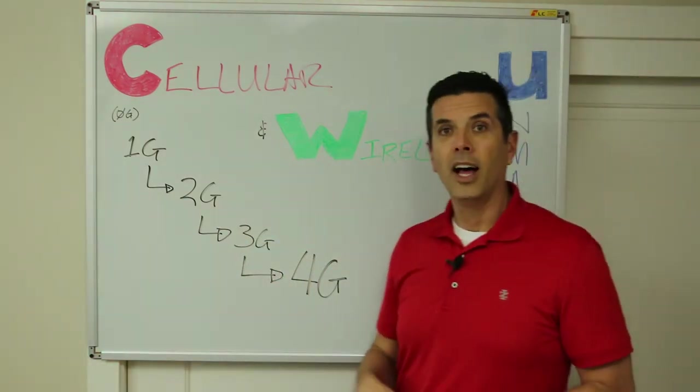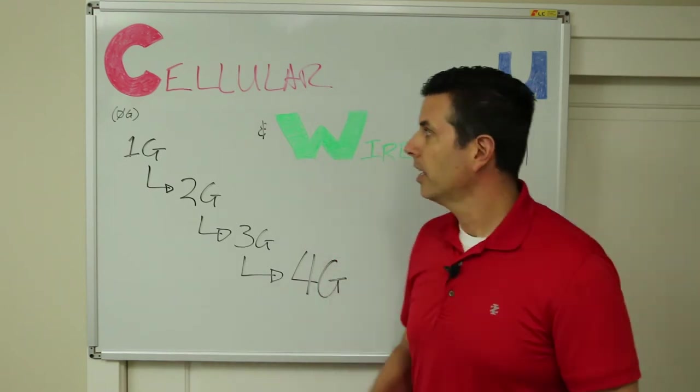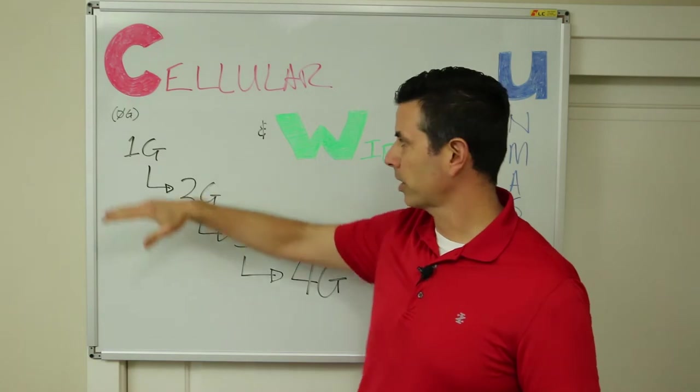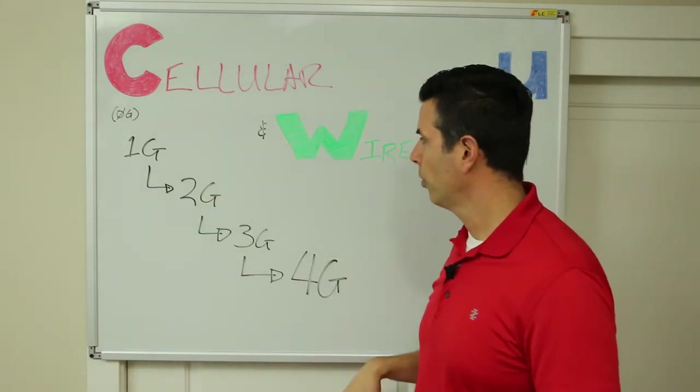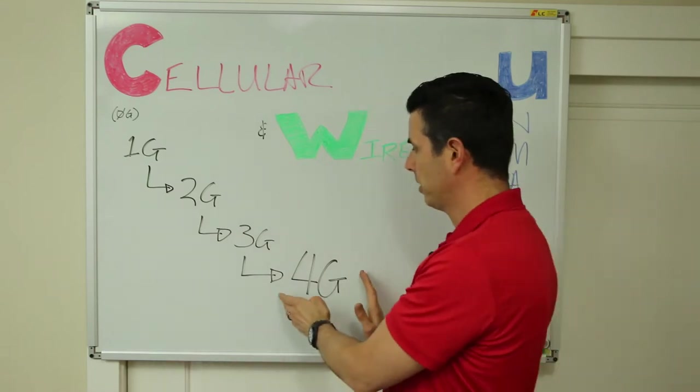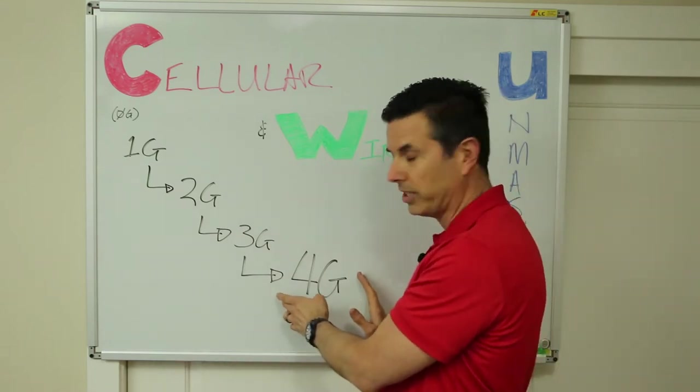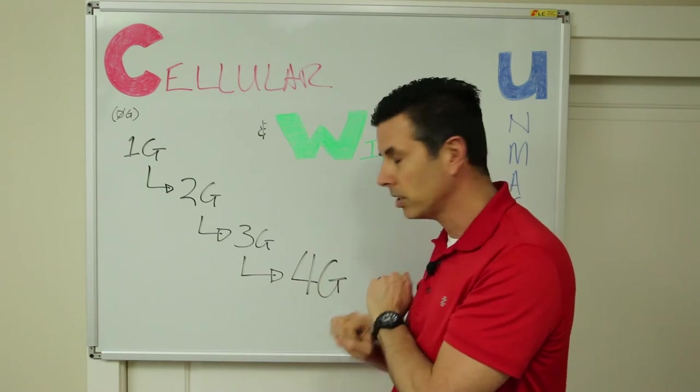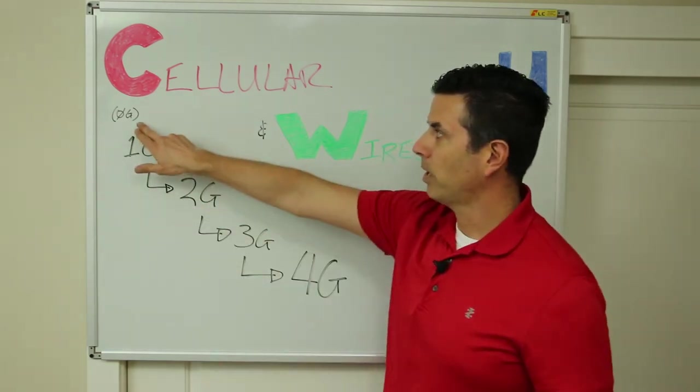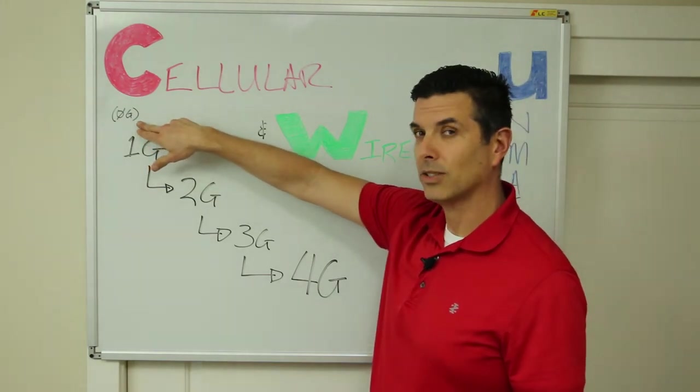Let's jump right to it. I want to talk today about first generation cellular networks, second, third, and fourth. We'll spend a little bit of time on 1G, 2G, and 3G, but I'll spend the bulk of the time on 4G and break down all the different frequency bands and what they mean and who's using them.